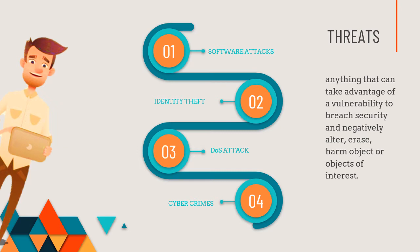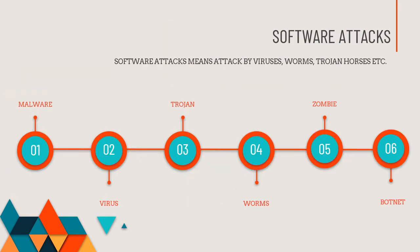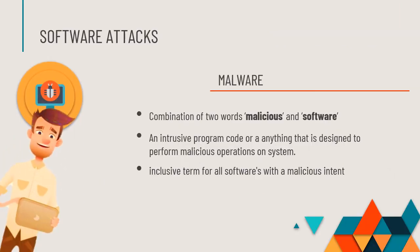Now we are going to see each one in detail. Software attacks means attacks by viruses, worms, Trojan horses, zombie computers, botnets, viruses, malware, etc. Cyber attacks or network threats based on malicious programs are called software attacks, and there are different types of software attacks.